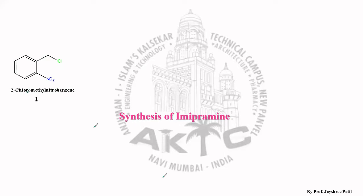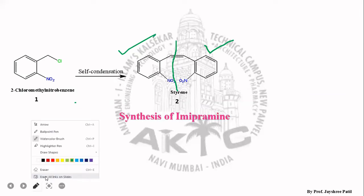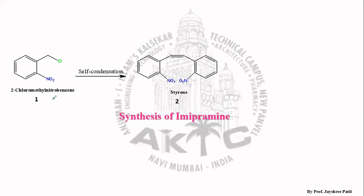When 2-chloromethyl nitrobenzene undergoes self-condensation, that will give the second compound, that is styrene. Self-condensation means two molecules of 2-chloromethyl nitrobenzene react together. The first half of the product comes from one molecule of 2-chloromethyl nitrobenzene, and the second part also comes from another molecule — that is what is called self-condensation. So 2-chloromethyl nitrobenzene undergoes self-condensation to produce styrene.